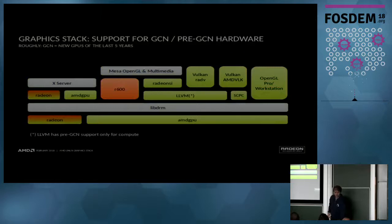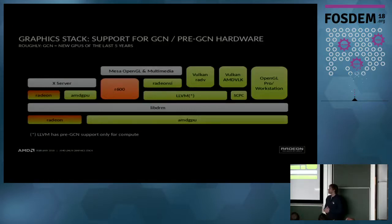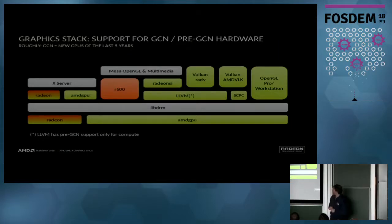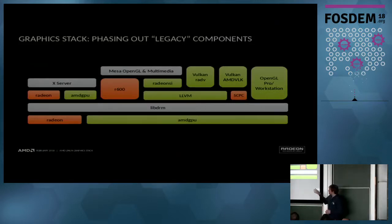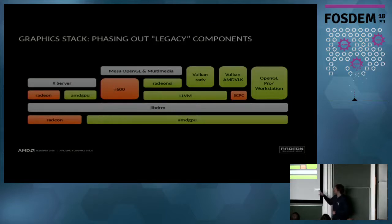Another way to slice this diagram is by what kind of hardware is being supported. GCN is kind of a breaking point for us — 2012, new generation of hardware. Everything in green supports those cards; what's in red is only for the older cards. There are also legacy components that are not necessarily going away because old hardware should still be supported, but we are not doing new feature development on them — which includes the Radeon kernel module, the DDX driver, the OpenGL driver for older hardware, and this problematic SCPC component we would also like to phase out.